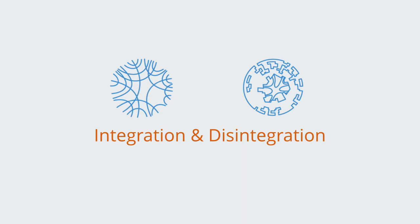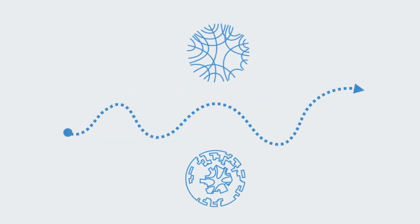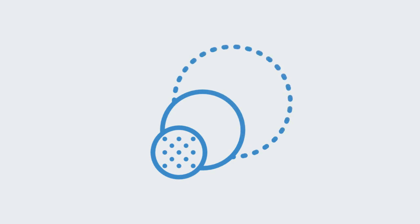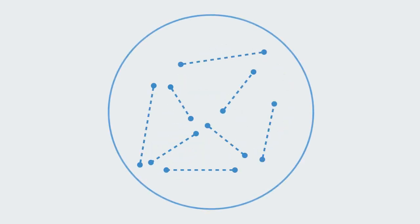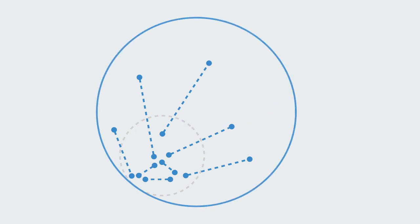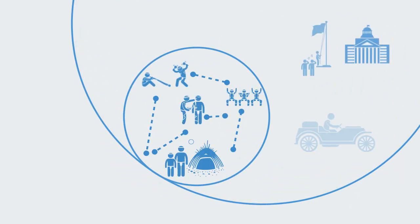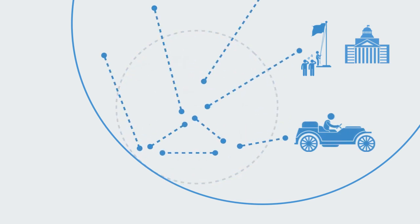Integration and disintegration form a dynamic process through which a system develops to become part of larger systems and environments. The integration of a system on one level must become at least partially disintegrated to promote integration on another level. Integration represents a unique set of interrelations between a group of parts that define them as autonomous from other systems. But for a system to interoperate with other systems, some connections will become compromised or redundant. For example, as a traditional community becomes integrated into a modern nation-state, some local social, economic, or cultural connections are replaced by those forming within the larger society.